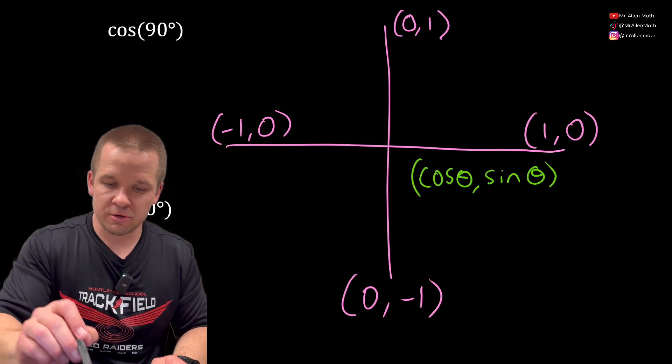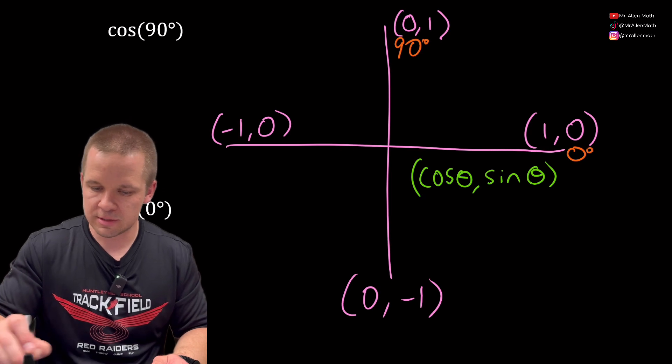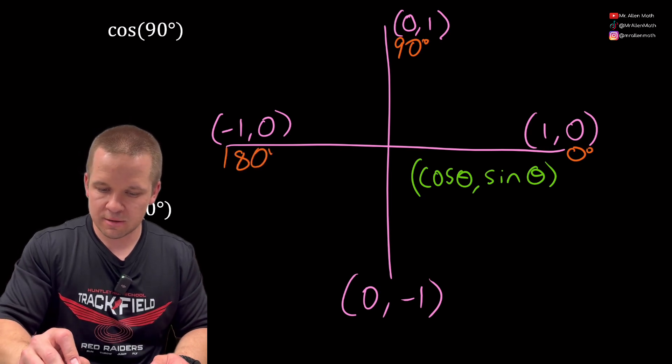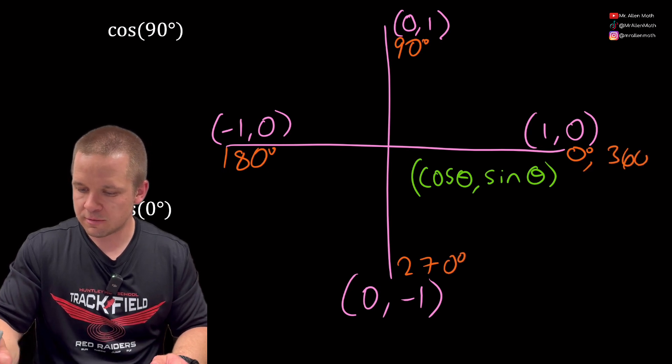Let's put our degrees here. This is zero degrees. This is 90 degrees. This is 180 degrees. And this is 270. And then all the way around 360.